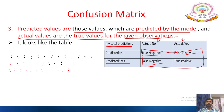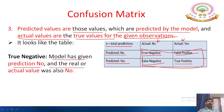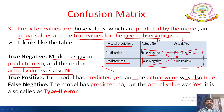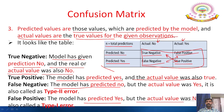True Negative means the model predicted 'no' and the actual value was also 'no'. True Positive means the model predicted 'yes' and the actual value was also 'yes'. False Negative means the model predicted 'no' but the actual value was 'yes' — this is called a Type 2 error. False Positive means the model predicted 'yes' but the actual value was 'no' — this is called a Type 1 error.